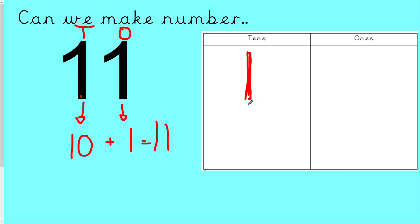Okay, there we are. And how many ones do I have? I have one — so I only need to draw one. There we are. I have drawn the number eleven. It has one ten and one one. Well done.